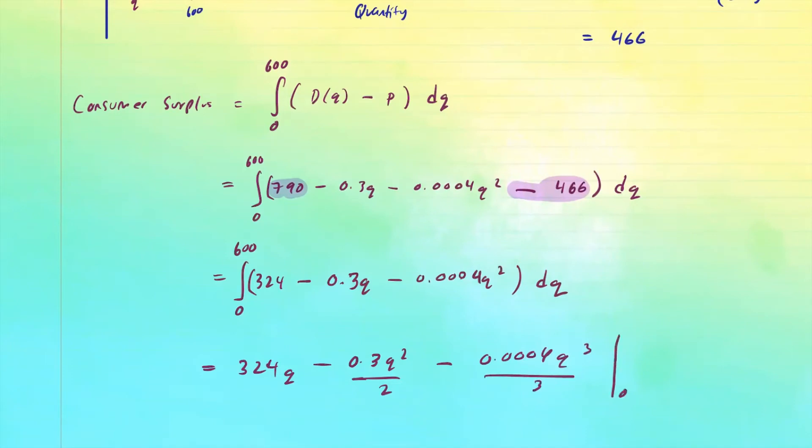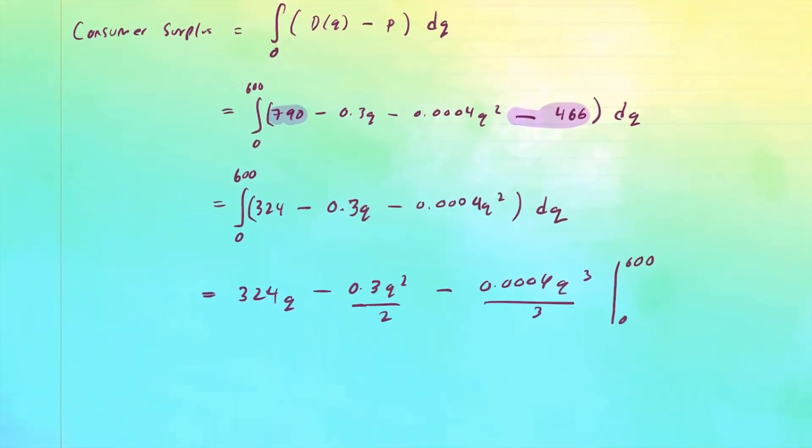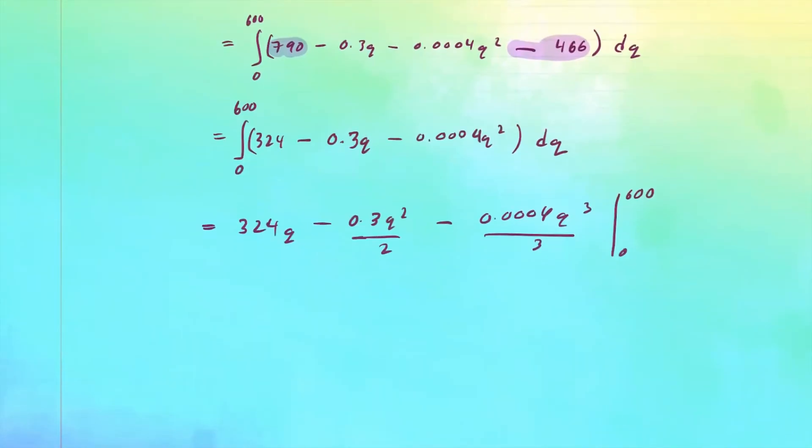And we're going to evaluate it from 0 to 600. So that would be the definite integral. We use the power rule of integration to simplify, to integrate this.